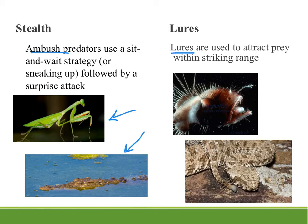Lures are another thing that predators use to attract prey within striking range. The angler fish lives way down deep in the ocean and has a little dangly bit that looks like something edible to attract prey that the angler fish itself will eat. Snakes also exhibit this — a particular type of viper has a tail that really looks more like a spider, and it will dangle that little bit of tail out there trying to attract a small mammal that might want to eat that spider, and then the snake eats it instead.